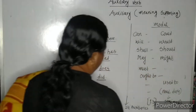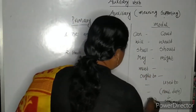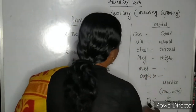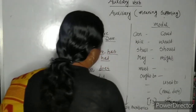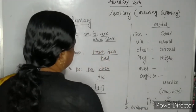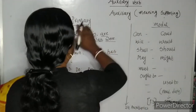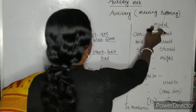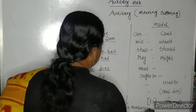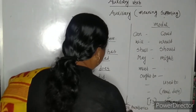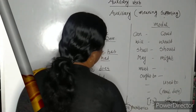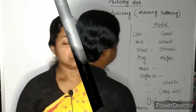Total 13 modal auxiliaries. At last, total primary and modal auxiliaries combined make 24 auxiliary verbs.